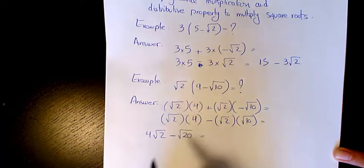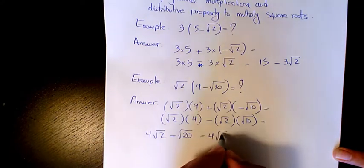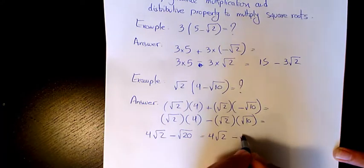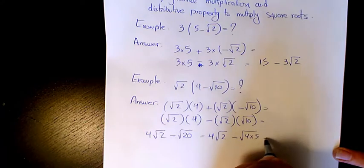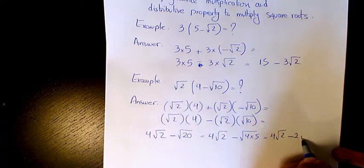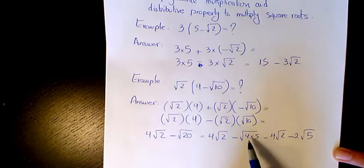We already learned how to simplify square roots, so 20 is 4 times 5, so we have 4 times 5, which makes it 4√2 minus 2√5 because the square root of 4 is 2.